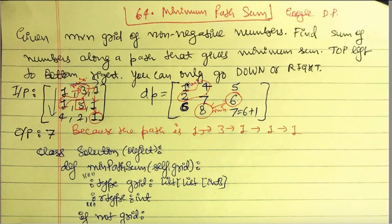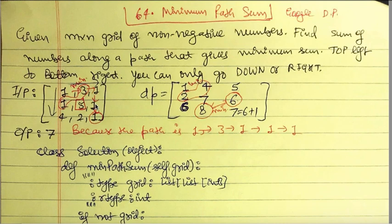After filling in the first row and first column, for each interior element there are two ways to arrive: from the top or from the left. We compare the two corresponding DP values and take the minimum. For the first interior element (5), the top DP value is 4 and the left DP value is 2; the minimum is 2, so 2 plus 5 gives a DP value of 7. For the next element (1), the left DP value is 7 and the top is 5; minimum is 5, so 5+1 = 6.